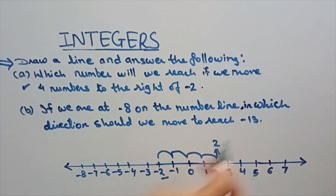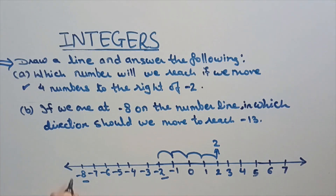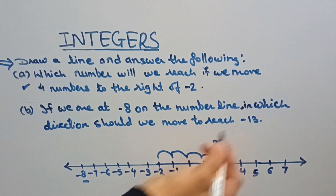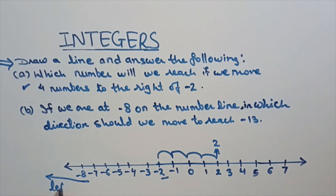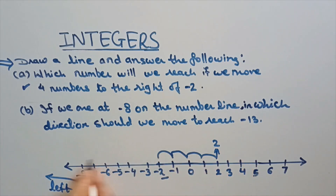Now, if we are at minus 8 on the number line, in which direction should we move to reach minus 13? Minus 8 is here and if you have to reach minus 13, you will move to the left-hand side.